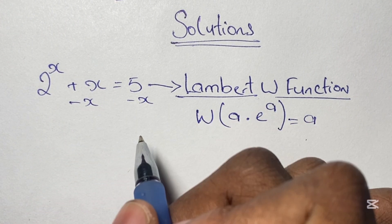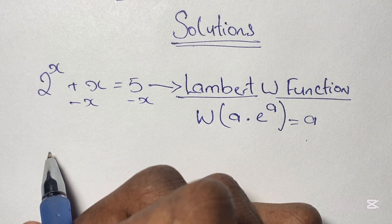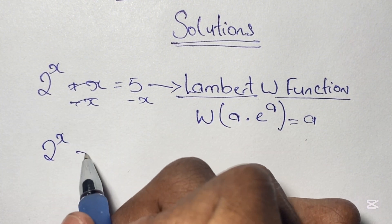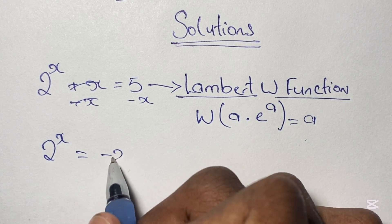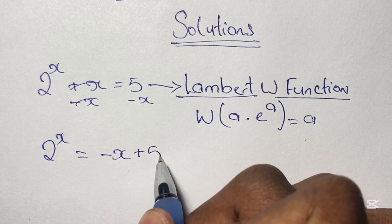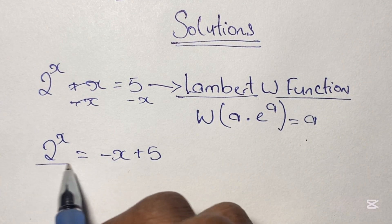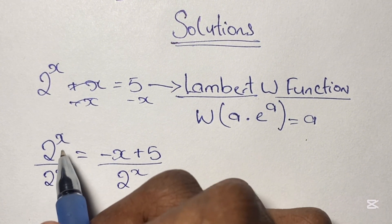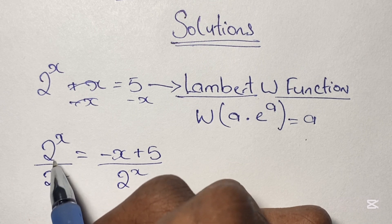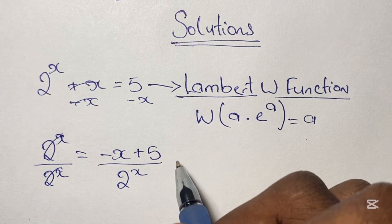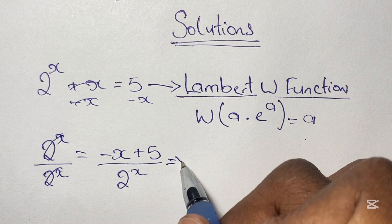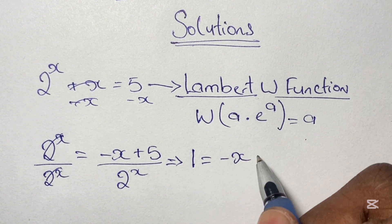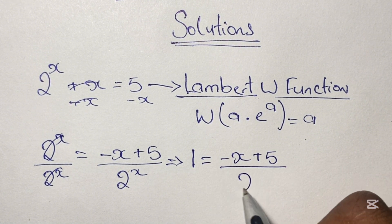We start by subtracting x on both sides of this equation so that 2 to the power of x is equal to negative x plus 5. Then from here we divide both sides by 2 to the power of x. So 2 to the power of x over 2 to the power of x is just 1, giving us 1 is equal to negative x plus 5 over 2 to the power of x.